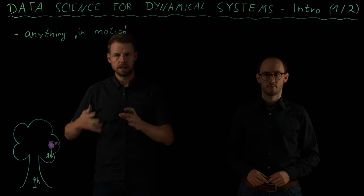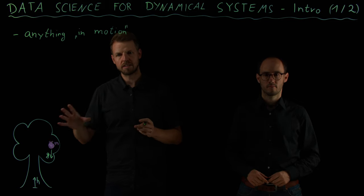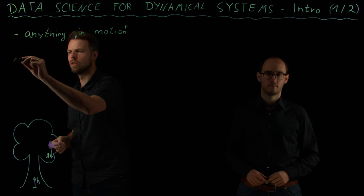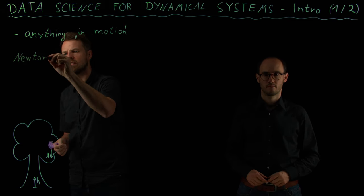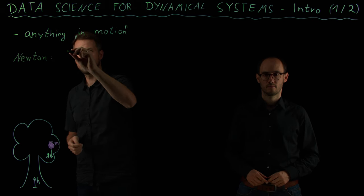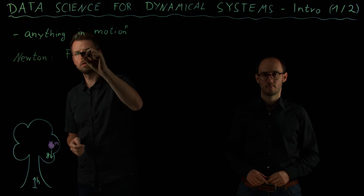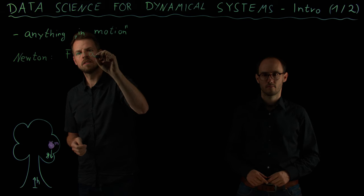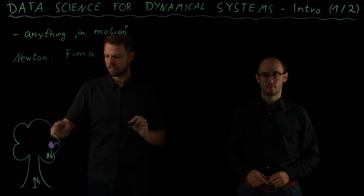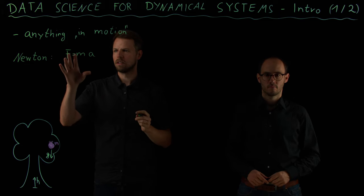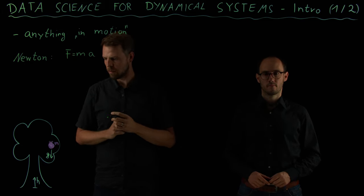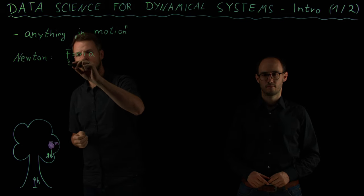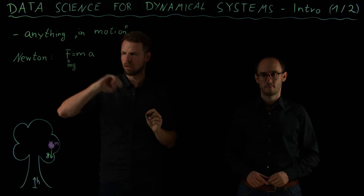So this is not a dynamical system for now, but this is something where we can start. We have this physical law, Newton's law, that tells us that F equals m times a. What this means is that the sum of the forces acting on this mass equals the acceleration of this apple. And what we know is acting on this apple is the gravitational force, which is the mass times the gravitational constant.